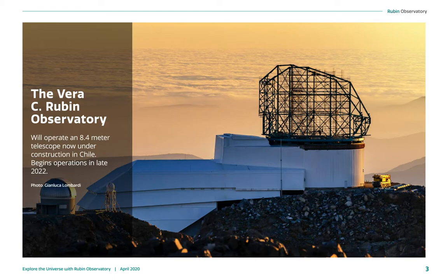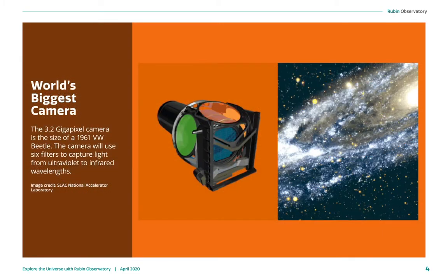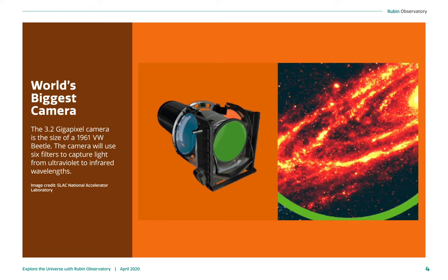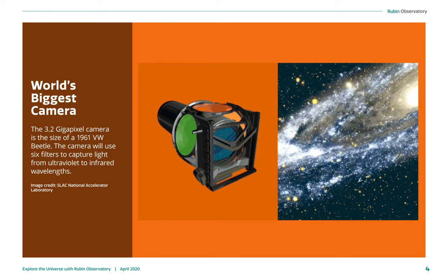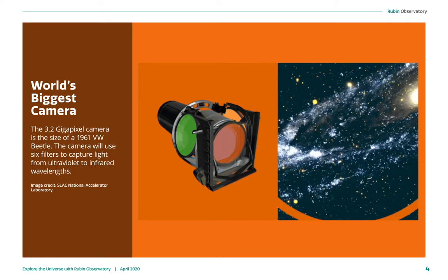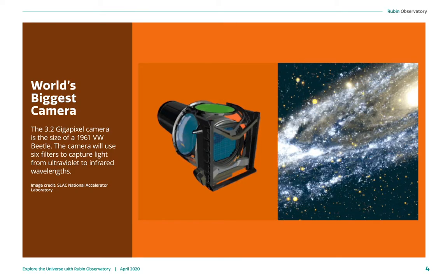The Vera C. Rubin Observatory is now under construction in Chile. It will have an 8 meter class telescope in it and it's scheduled to begin operations late in 2022. This telescope will also have the world's biggest camera as part of its full features. This camera will image the universe in six different colors ranging from ultraviolet to infrared wavelengths.